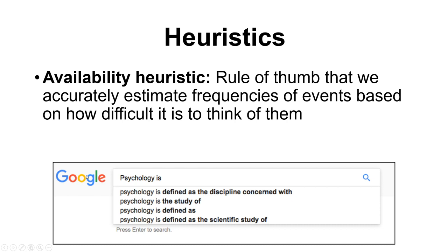Interestingly, Google uses something similar to an availability heuristic, returning search results based on what is searched most often. Google can actually check exactly what has been searched and surface the most common results. We just have to keep in mind that our own memories aren't necessarily reliable, so we're subject to the biases that come from that.